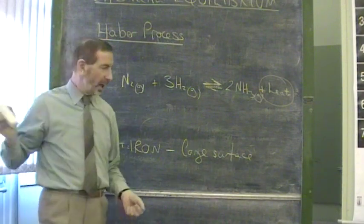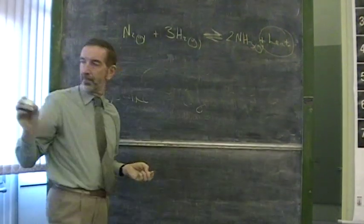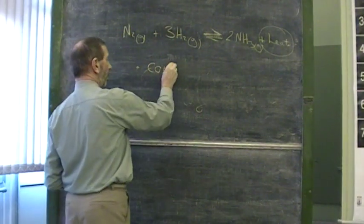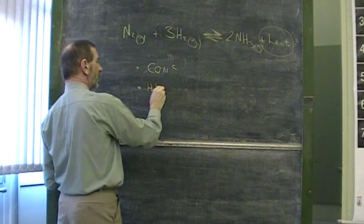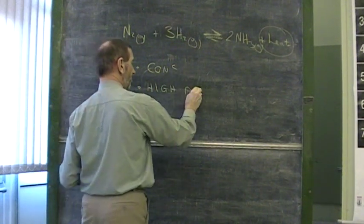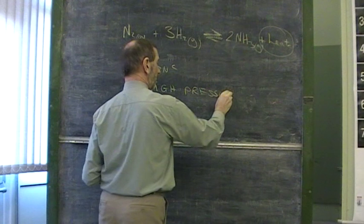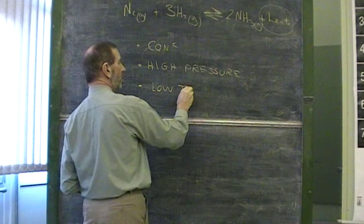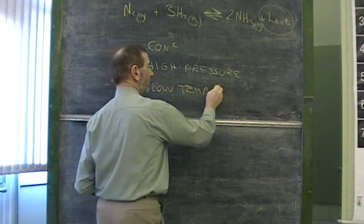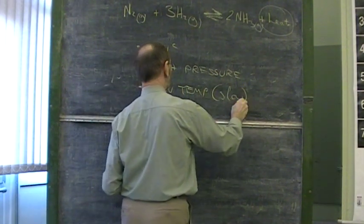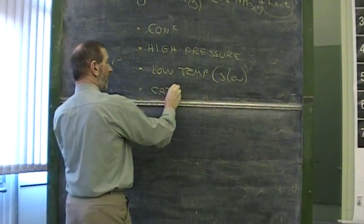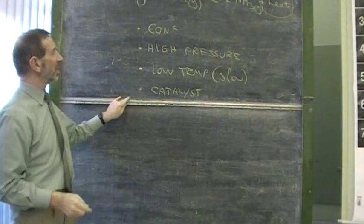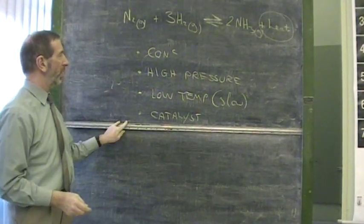So to summarize, the Haber process makes use of changing concentration. It makes use of a high pressure. It makes use of, well, theoretically, a low temperature. But remember, that might be too slow, so you have to be careful. And it also makes use of a catalyst. But a catalyst does not encourage the forward reaction. It's the odd one out.